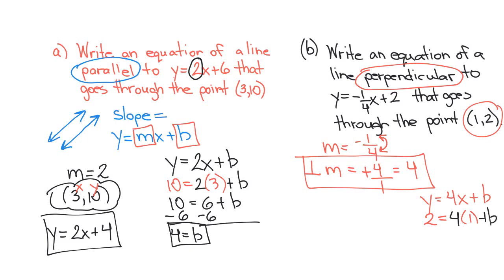So now I'll use my solving equations and I'll solve for b. I want to isolate b, so the inverse of a positive four would be negative four. That means b will be negative two. So my new equation is y equals four x minus two.